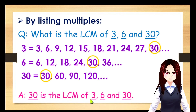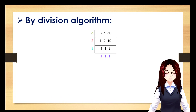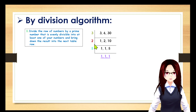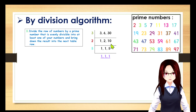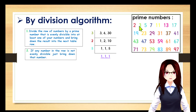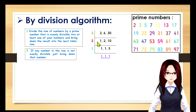Let's try it by division algorithm. For step 1, divide the row of numbers by a prime number. We use 3: 3 divided by 3 equals 1, 6 divided by 3 equals 2, and 30 divided by 3 equals 10. We further divide by prime number 2: 1 divided by 2 — you can't, so bring down 1; 2 divided by 2 equals 1; and 10 divided by 2 equals 5.